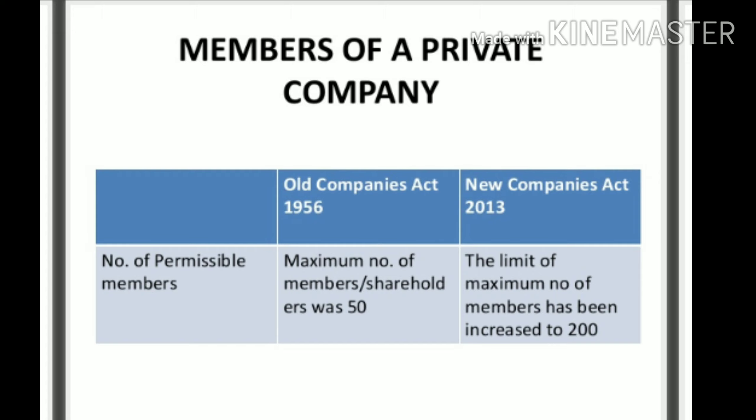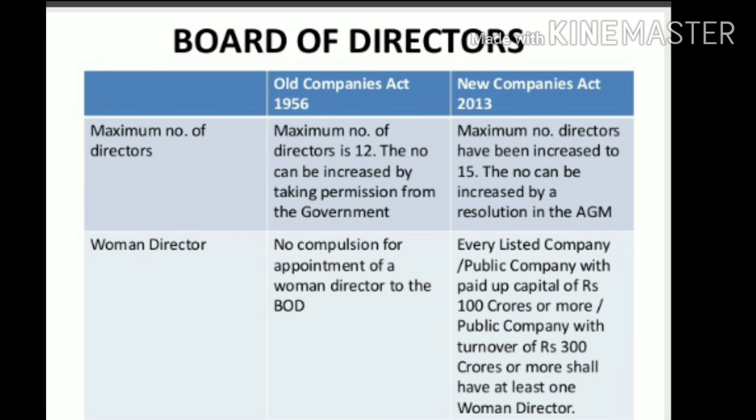Another difference relates to the members of a private company. Under the old Companies Act 1956, the maximum number of members and shareholders was 50. But under the Companies Act 2013, the limit has been raised to a maximum of 200.